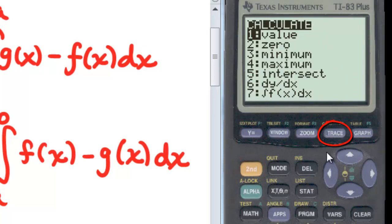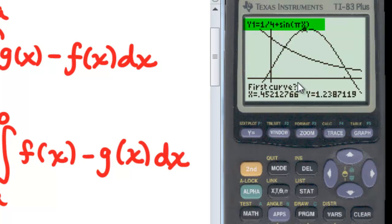Now, in this case, we're going to hit second and trace, and we're going to go and find five, the intersection points of these two functions. It says first curve, and it gives you Y1 up top, so hit enter. Second curve that we're looking for the intersection of would be Y2, hit enter. And then you're going to arrow over toward the place where those two functions intersect, and hit enter.